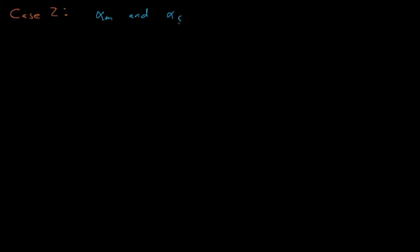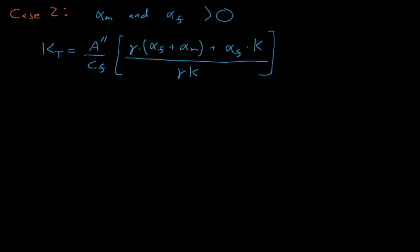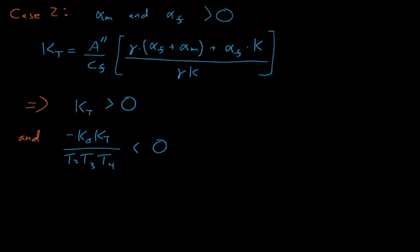In case two, both alpha_m and alpha_f are positive, meaning entirely positive feedback coefficients from the fuel and from the moderator. This case will result in unstable behavior. The k_t term equals a combination of alpha_fuel and alpha_moderator coefficients that appear exclusively in k_t's numerator. Most other terms are time constants and thus always positive, so if alpha_f and alpha_m are positive, k_t must also be positive. This is problematic because our Routh matrix's left-hand-side column contains a negative k0·k_t divided by t2·t3·t4 term, where k0, t2, t3, and t4 are all positive. So if k_t is also positive, this term is negative, meaning our system will be unstable.